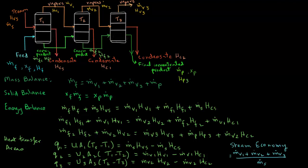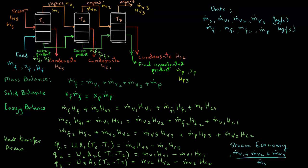Typically, the steam economy of a triple effect evaporator is between 2 and 3. Now note the units for these various quantities: m.s, m.v1, m.v2, m.v3 are in kilograms per second, and so are m.f, m.f1, m.f2, and m.p — they are all kilograms per second, as they are mass flow rates. xf and xp, the solid fractions, are dimensionless.